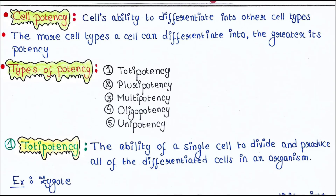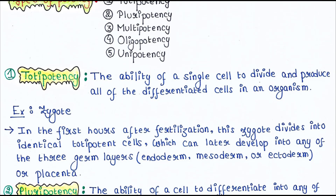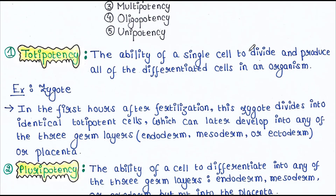First is totipotency. The ability of a single cell to divide and produce all of the differentiated cells in an organism is called totipotency. Only the zygote has this capability — the zygote can form a whole body. In the first hours after fertilization, the zygote divides into identical totipotent cells.